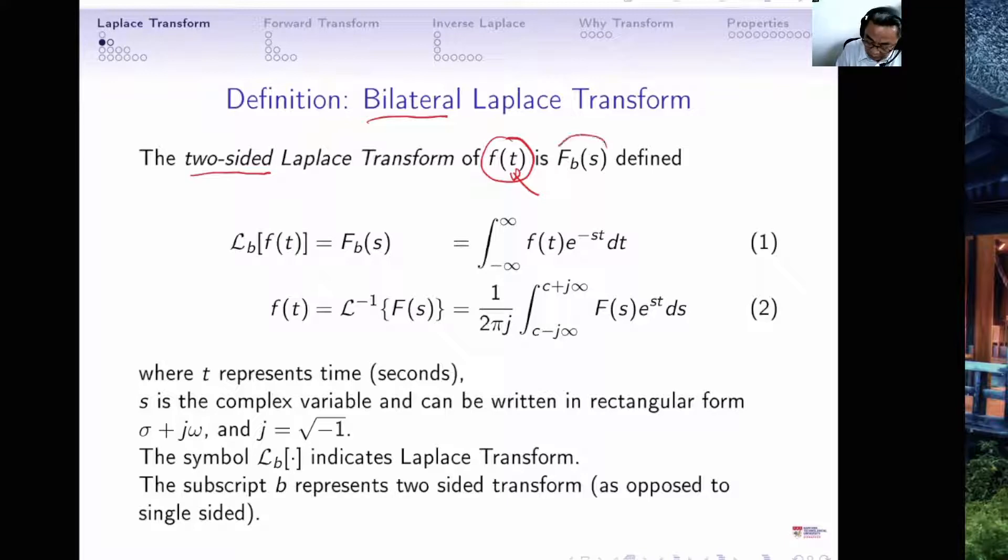It converts it into capital F(s), where s is the Laplace Transform variable, and here the little b stands for the bilateral transform.